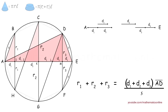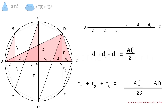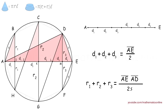We can see that D1, D2, and D3 are line segments that form the diameter AE. Rearranging the segments, we can see that D1 + D2 + D3 is equal to half of line AE. Therefore, R1 + R2 + R3 is equal to line AE times line AD over 2S. This is the important equation we need as a result of the similar triangles.